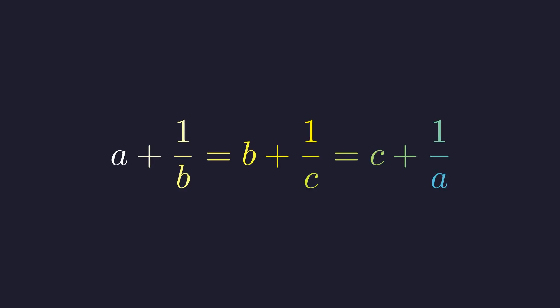Here's a neat algebra puzzle. We're given a symmetric relationship between three variables, A, B, and C, and we need to find the value of their product, ABC, such that values of A, B, and C are distinct.